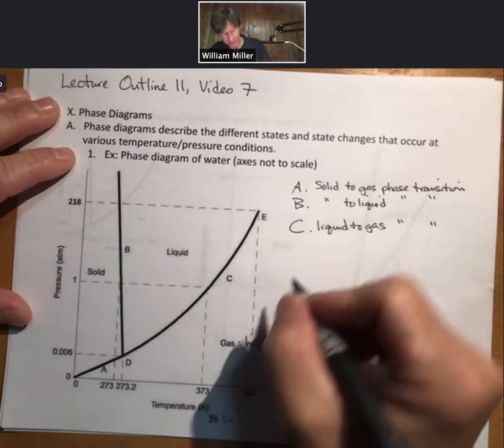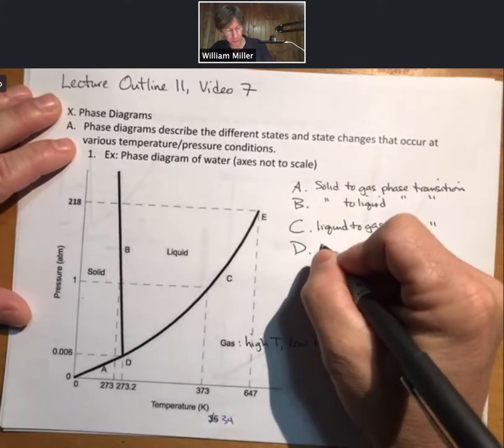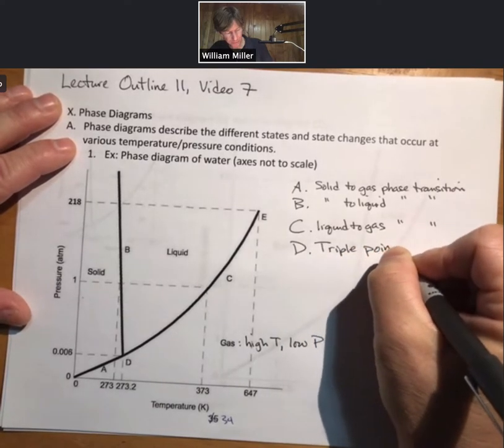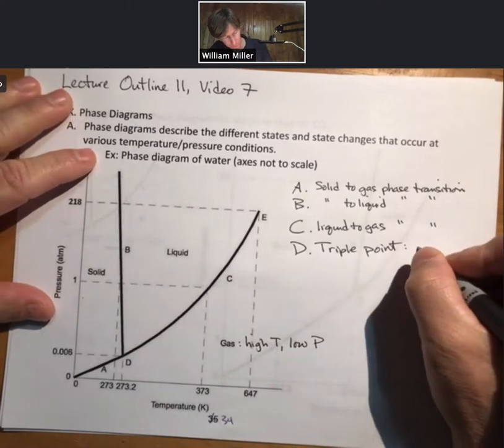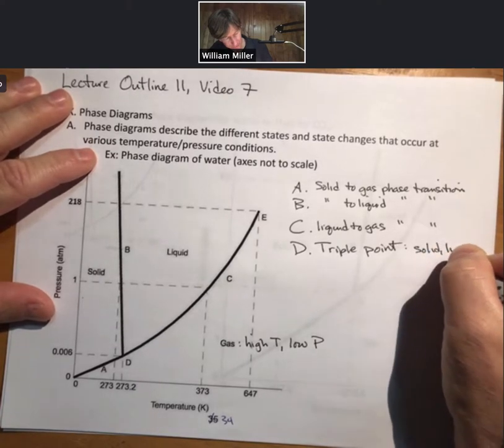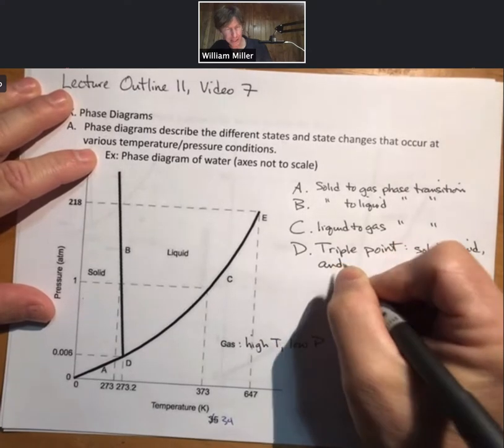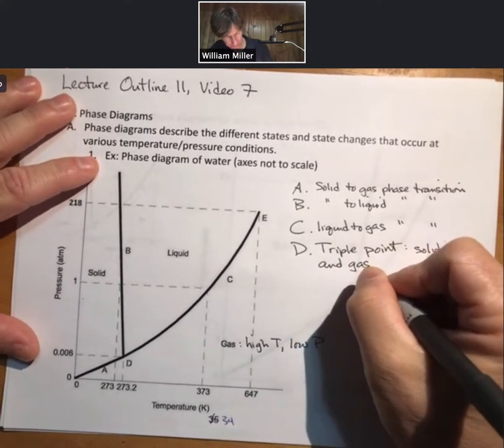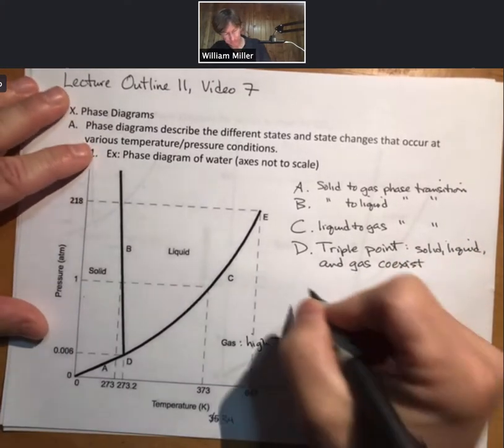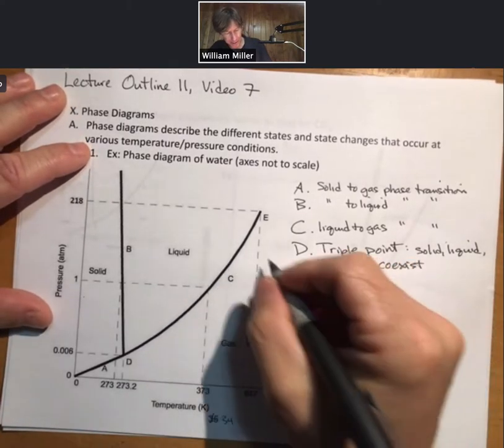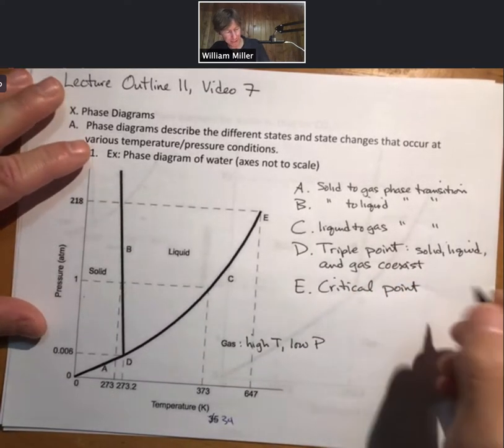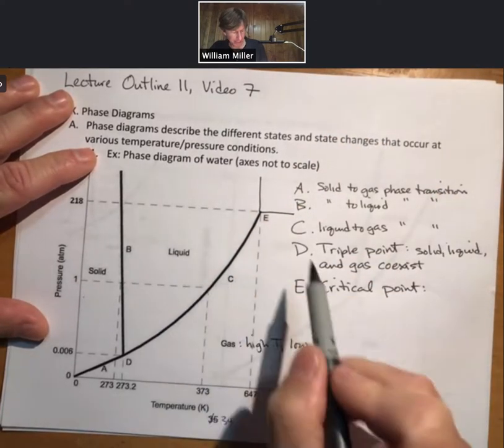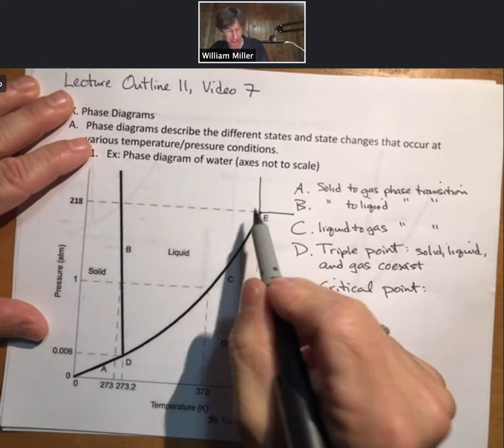There are two other points on this. One is point D. Point D is what's called the triple point. It is the one combination of temperature and pressure at which solid, liquid, and gas all exist. Then point E up here, that's the critical point at higher temperatures and pressures than the critical point.